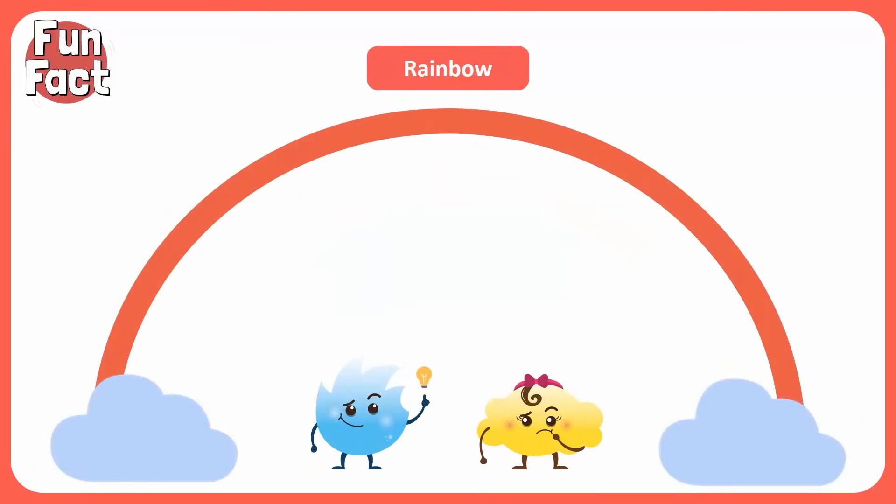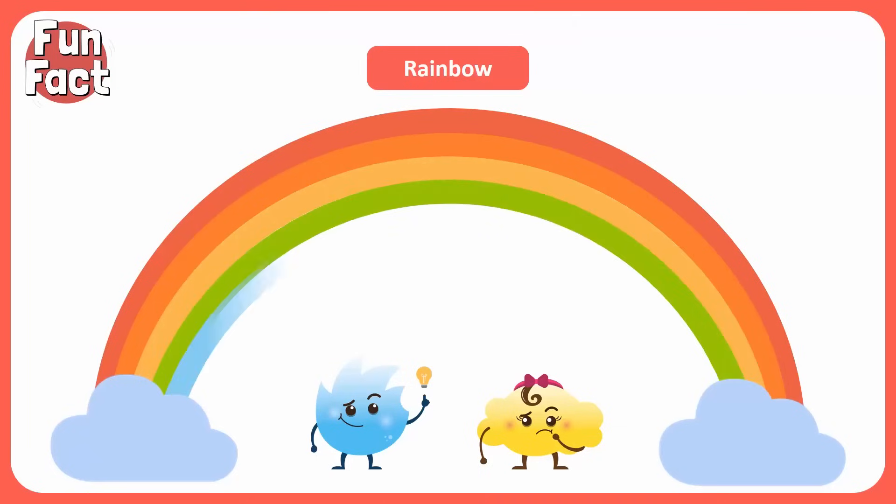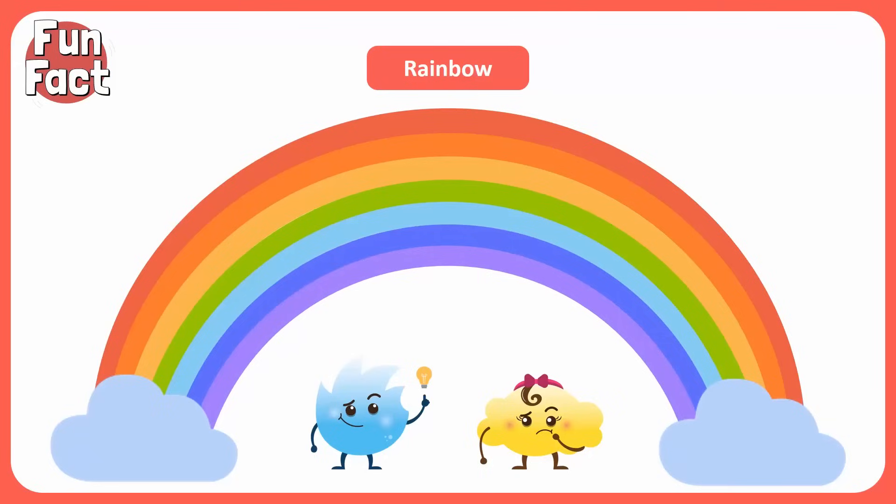Red, orange, yellow, green, blue, indigo, and violet. The colors of a rainbow are always in the same order. Red is always on the outside because red bends the least, and violet is always on the inside because it bends the most.